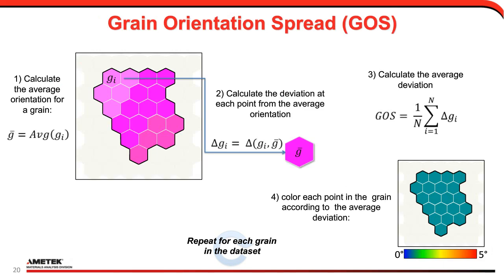Another approach is the grain orientation spread (GOS). This is a grain-based idea, so you first partition points into grains using our standard grain reconstruction approaches based on nearest neighbor misorientation. The first step is to calculate the average orientation for a grain, then for each point in that grain, calculate the deviation in orientation from the average, and then calculate the average of all those. That gives you this grain orientation spread, or GOS. Each point in the grain gets the same color because you're just looking at the average. Then repeat for each grain in the dataset, ending up with a map where each grain is colored according to this average deviation.